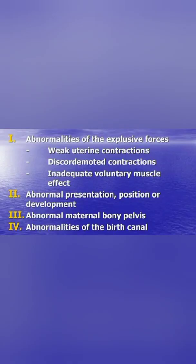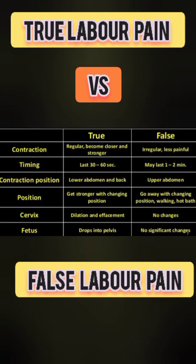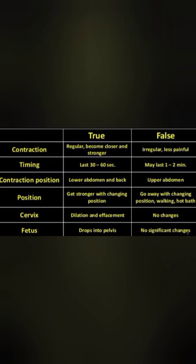Additionally, if the mother has weak uterine contractions and is unable to give voluntary muscle effort, or has an abnormal maternal pelvis or abnormality in the birth canal, all of these may lead to abnormal labor or dystocia.